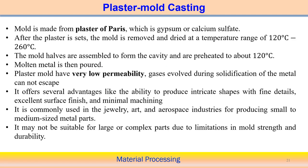Another molding operation is called the plaster mold casting process. It is simply made from plaster of paris — gypsum or calcium sulfate. First, the plaster of paris is set, then the mold is removed and dried at 120 to 260 degrees centigrade. The mold halves are assembled to form a cavity and preheated to around 120 degrees centigrade, after which the molten metal is poured in. However, plaster of paris has very low permeability once solidified.